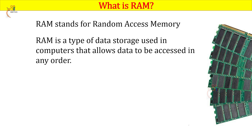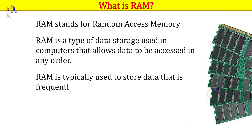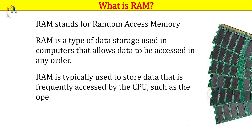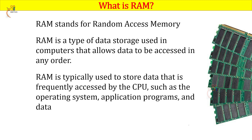RAM is typically used to store data that is frequently accessed by the CPU, such as the operating system, application programs, and data files that are currently in use. When we use the CPU frequently, we can access this RAM.